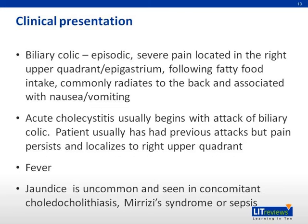Patients with acute cholecystitis typically complain of abdominal pain, most commonly in the right upper quadrant or epigastrium. The pain may radiate to the right shoulder or back. Characteristically, the pain is steady and severe. Associated complaints may include nausea, vomiting, and anorexia. There is often a history of fatty food ingestion about one hour or more before the initial onset of pain. An episode of prolonged right upper quadrant pain greater than four to six hours, especially if associated with fever, should arouse suspicion for acute cholecystitis as opposed to simple biliary colic.